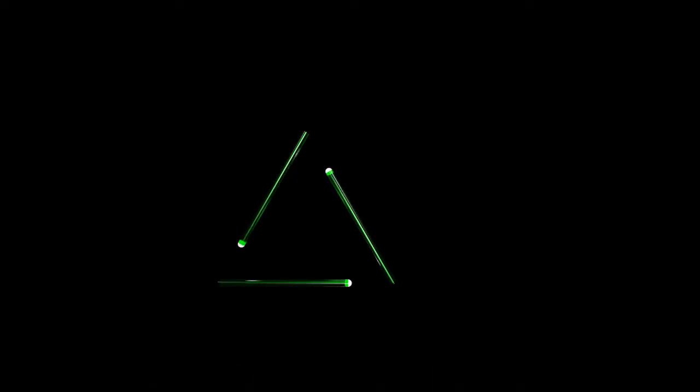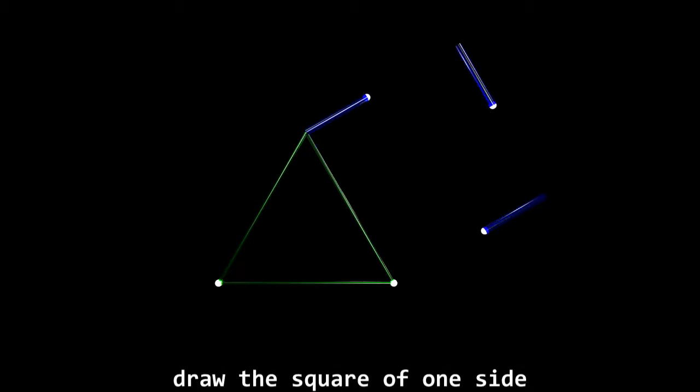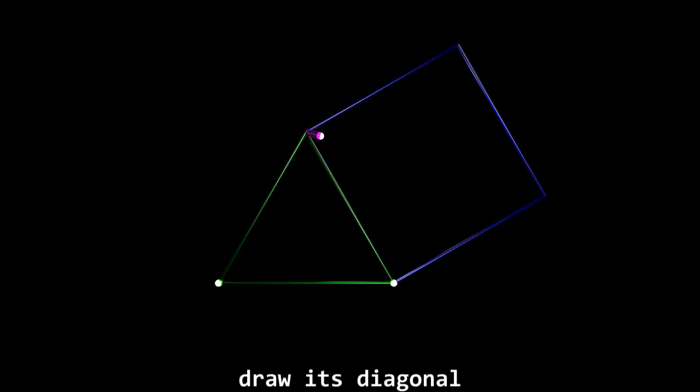Bathe's method from 2011. We draw an equilateral triangle, draw the square of one side, draw its diagonal.